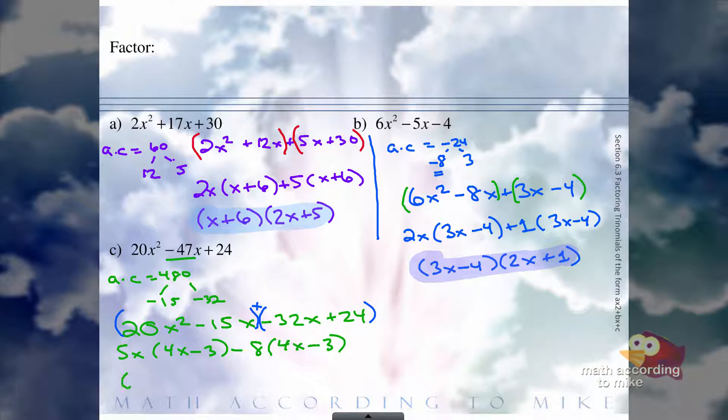They both have a 4x minus 3. Taking that out, we are left with a 5x minus 8. So that is our final answer.